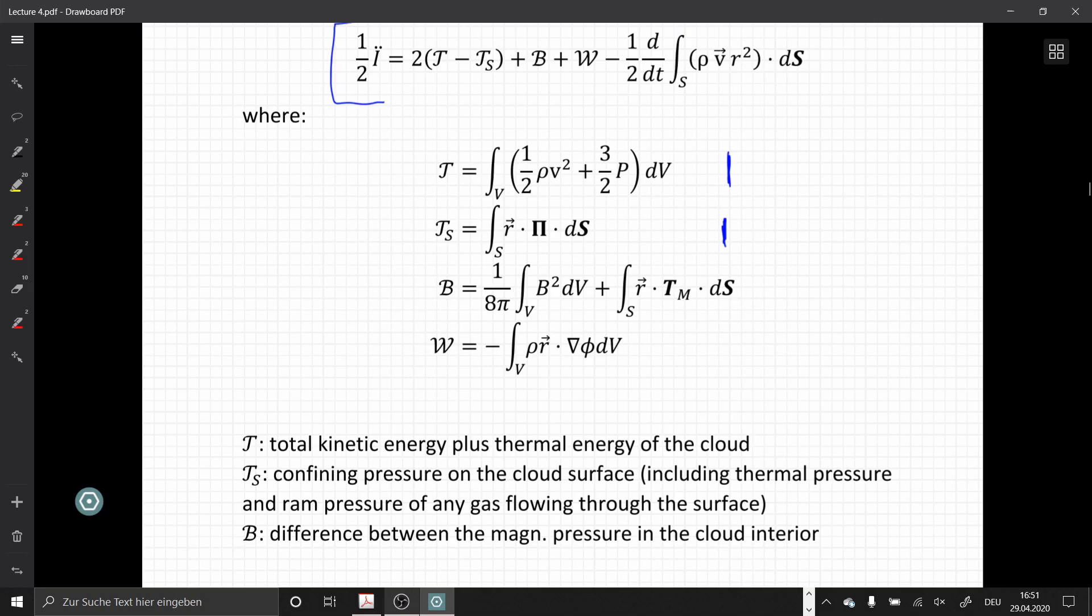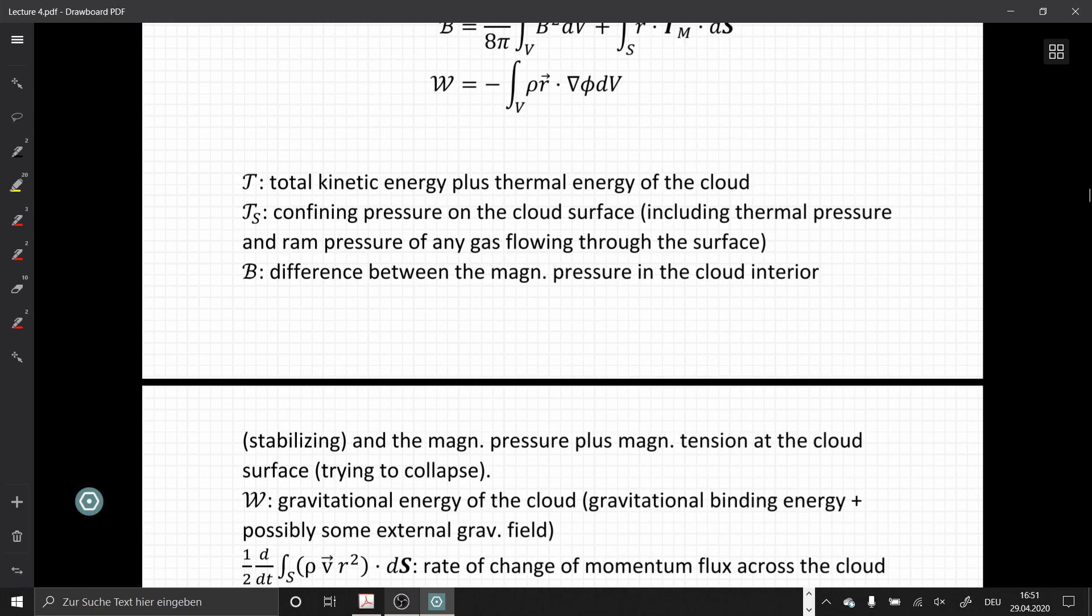Then B is just the difference between the magnetic pressure in the cloud interior, which stabilizes our cloud against collapse, and the magnetic pressure plus the magnetic tension at the cloud surface, which is trying to collapse our cloud. And finally W is the gravitational energy of the cloud, so the gravitational binding energy, gravity plus possibly some external gravitational field overlaid over the internal gravitation.